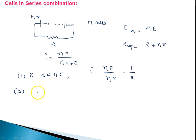Similarly, if R is much greater than Nr, then I equals NE divided by R. This is N times the current due to a single cell. So, in this case, the series grouping of cells is the useful situation — the current in the circuit is N times that of a single cell.